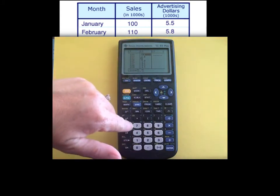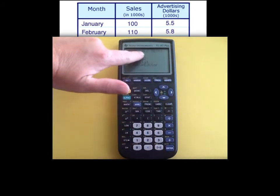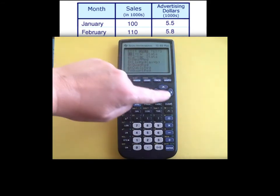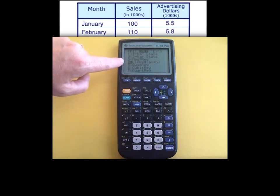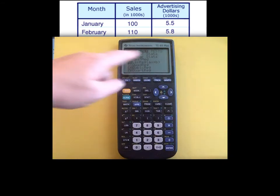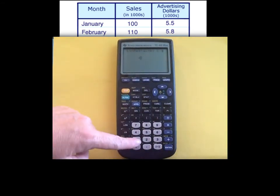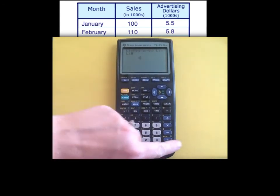So if I want to get the equation, you already know how to do it. You hit stat. You go to calculate. I'm going to that Linreg, the linear regression, AX plus B. You might have a calculator that also has Linreg BX plus A. Do not choose the BX plus A. We want AX plus B. I have L1 comma second L2. Hit enter.